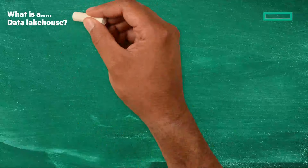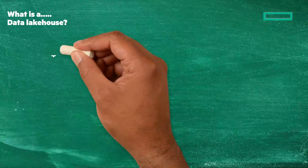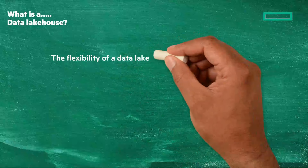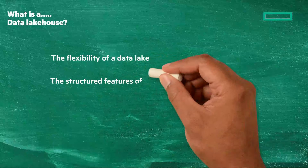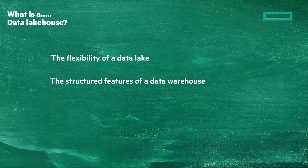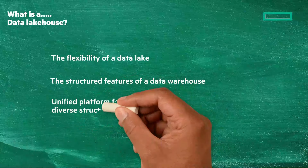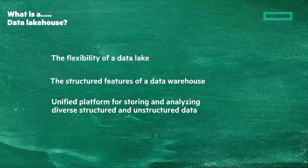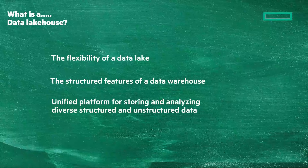What is a data lake house? A data lake house combines the flexibility of a data lake with the structured features of a data warehouse, offering a unified platform for storing and analyzing diverse structured and unstructured data. A hybrid data lake house architecture leverages on-premises and cloud for data processing and storage.